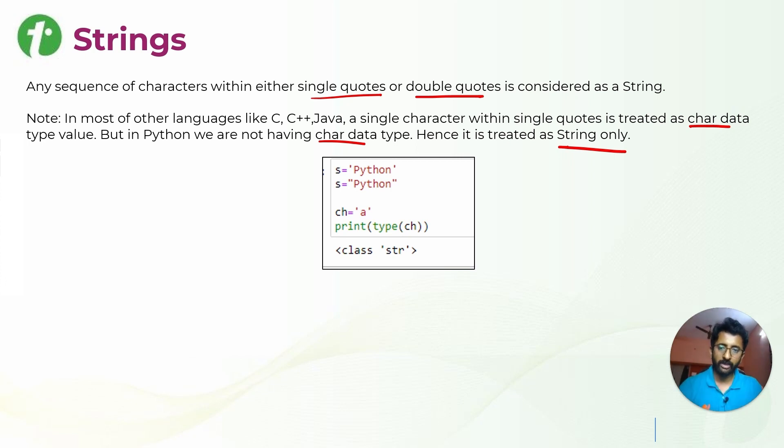I'm just giving you an example. For example, s is Python in single quotes or s is Python in double quotes, ch is A. For all of this, whenever I am doing type, type of ch, that is str. So class is string.